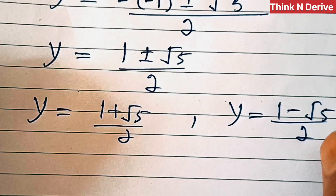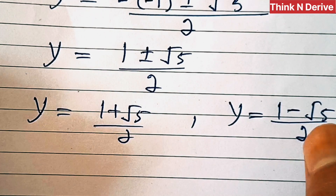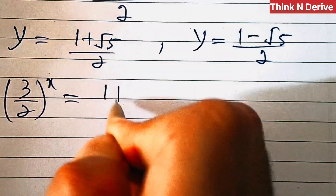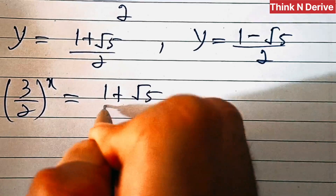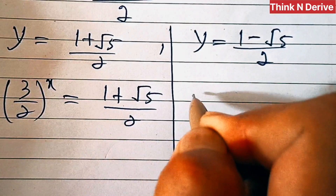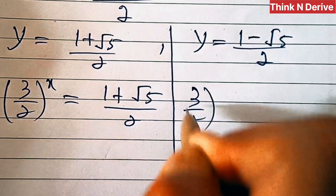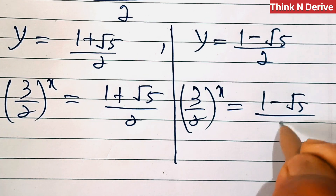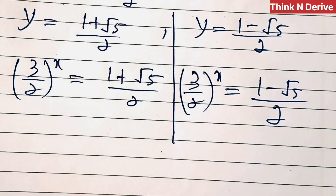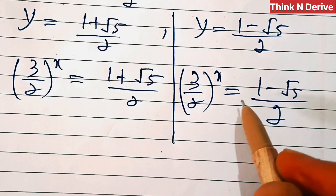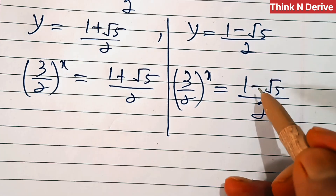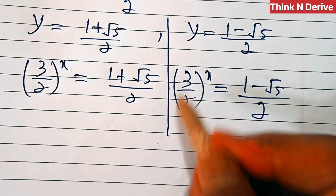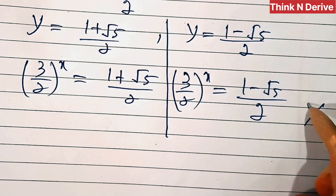Now if we substitute back, we have (3/2)^x equals (1 minus root 5) over 2. Since square root of 5 is greater than 2, this number will be less than 0. But (3/2)^x is always greater than 0, so we will not consider this solution.